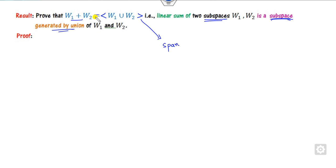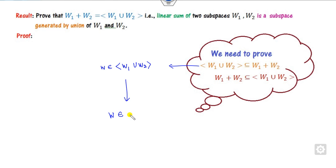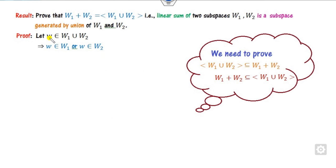To prove this equality, we need to show each set is contained in the other. For the first part, we take an element from the linear sum and prove it belongs to the linear span of the union. Since it is a union, we start from here: take w belonging to this, and the target is to prove it belongs to the linear span.